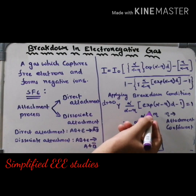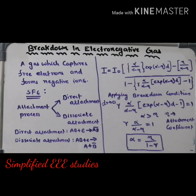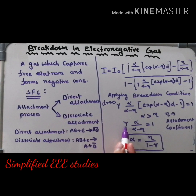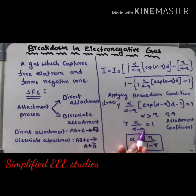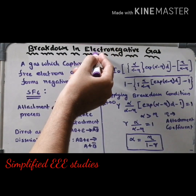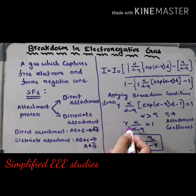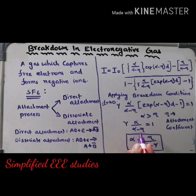Suppose in this case α is greater than η, where α is known as Townsend's primary ionization coefficient. Then I can rewrite the equation as: γ into α divided by (α − η) equals 1, where γ is Townsend's secondary ionization coefficient. Taking α as a common factor, the breakdown condition simplifies to: α = η divided by (1 − γ). So this is actually the breakdown condition for electronegative gas.